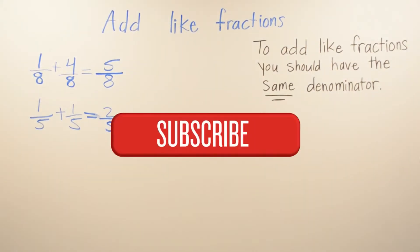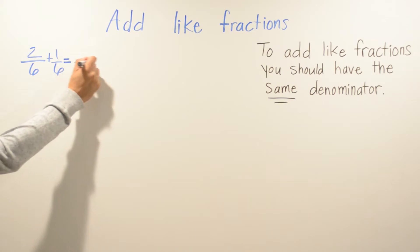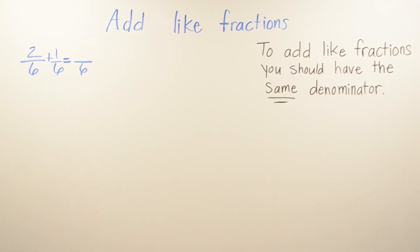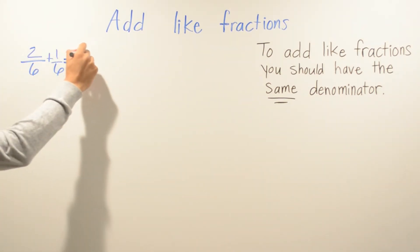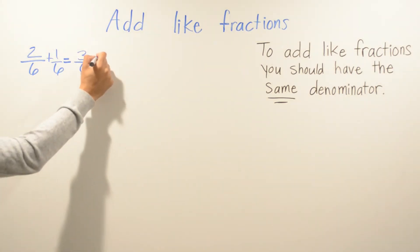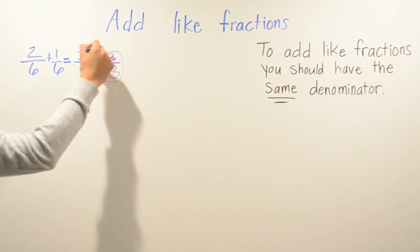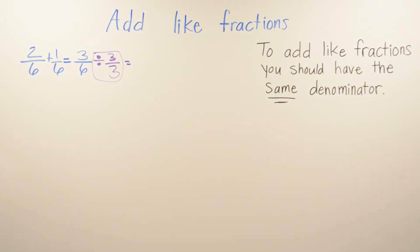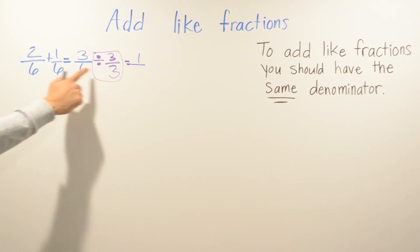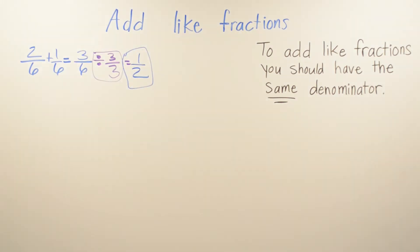In this example we have 2/6 plus 1/6. We leave the denominator the same because the denominator doesn't change, so it's going to be 6. Then 2 plus 1 is 3, so the answer is 3 over 6. But if your teacher wants you to simplify — which most likely will always happen — go ahead and simplify. What number goes into both? We simplify by 3: 3 goes into 3 one time, and 3 goes into 6 two times, so your answer is 1 half.